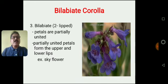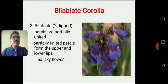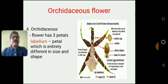This is a bilabiate corolla — it has two lip-like petal structures, which is why it is called bilabiate corolla. It is generally found in the family Lamiaceae, whose old name is Labiatae. This is the Orchidaceae flower — it looks very beautiful. This type of flower consists of three petals called the labellum, which is a very typical structure present in the family Orchidaceae.